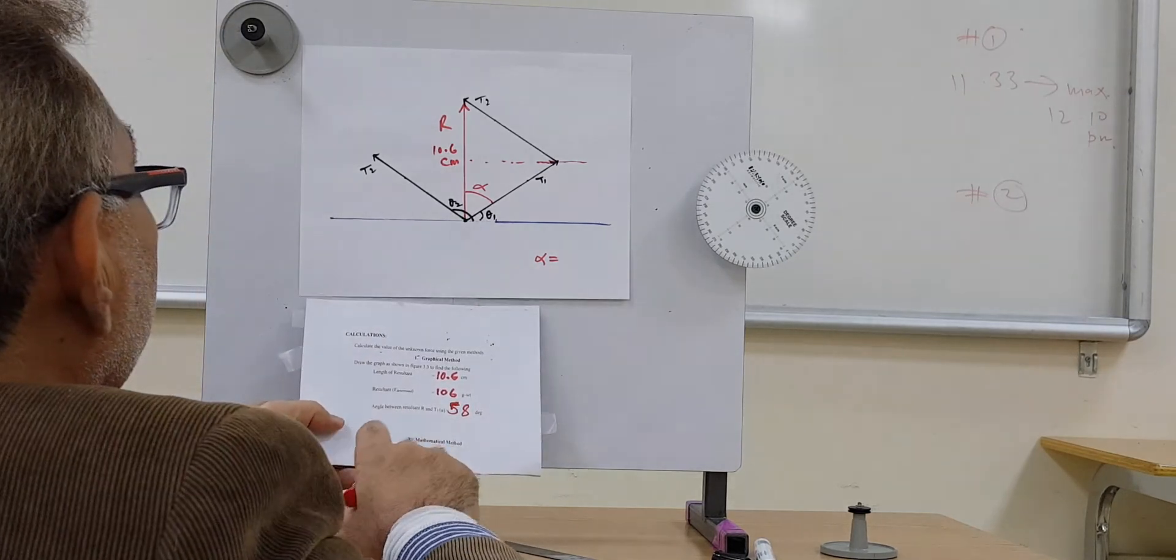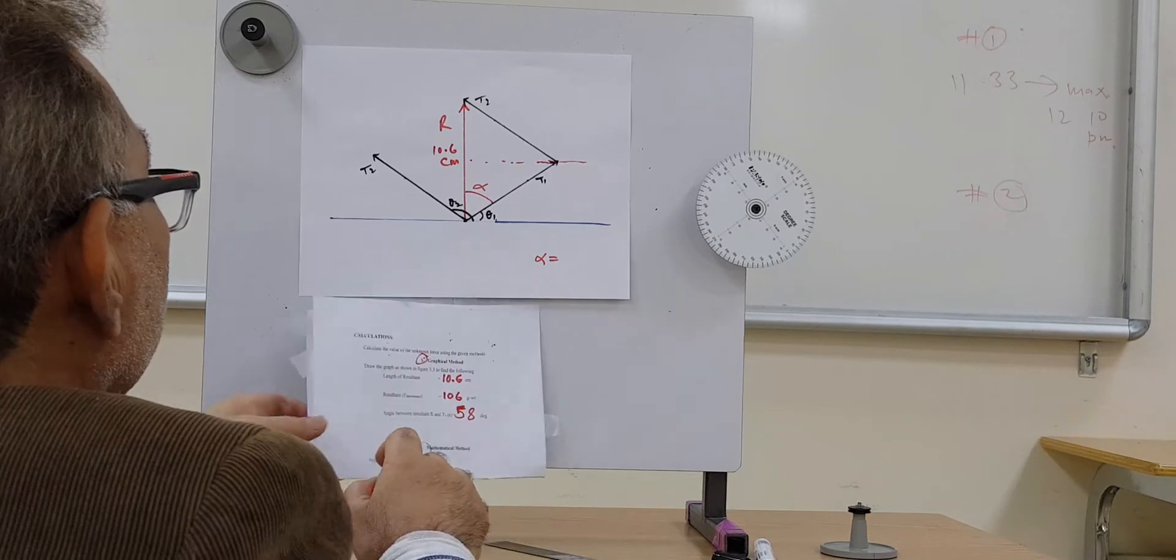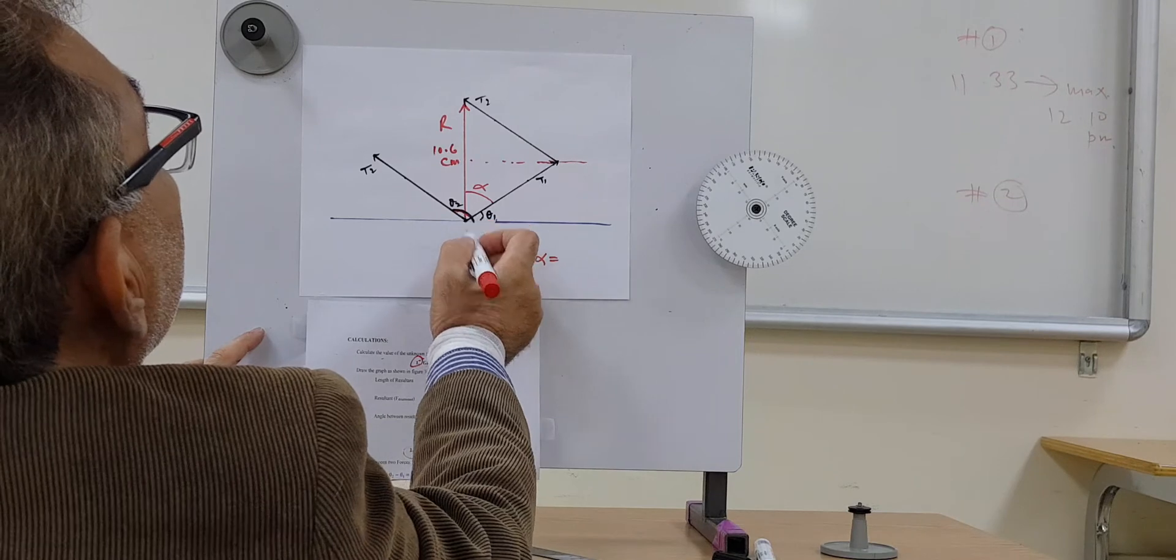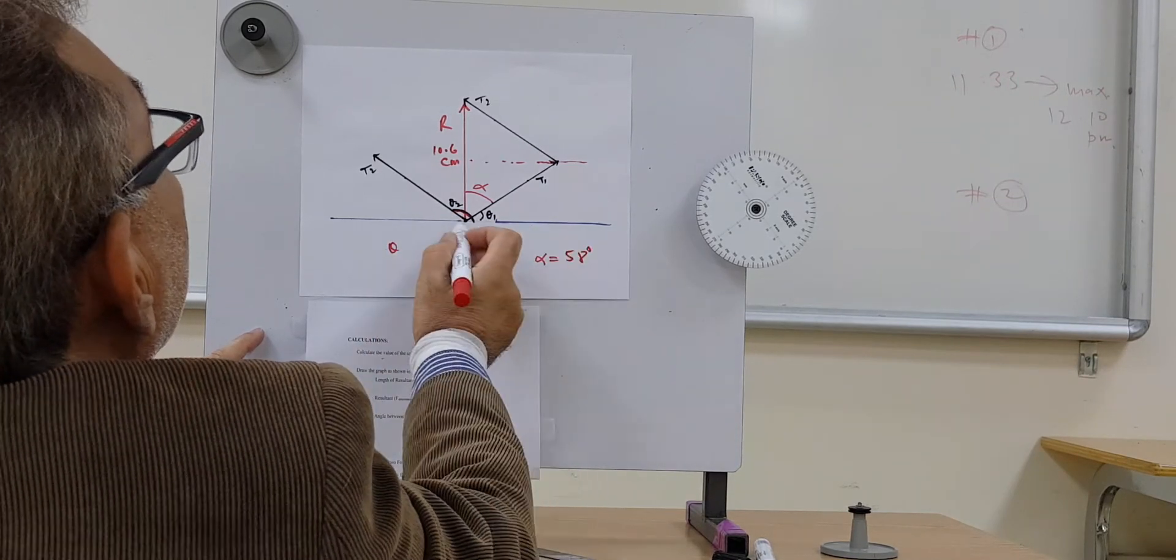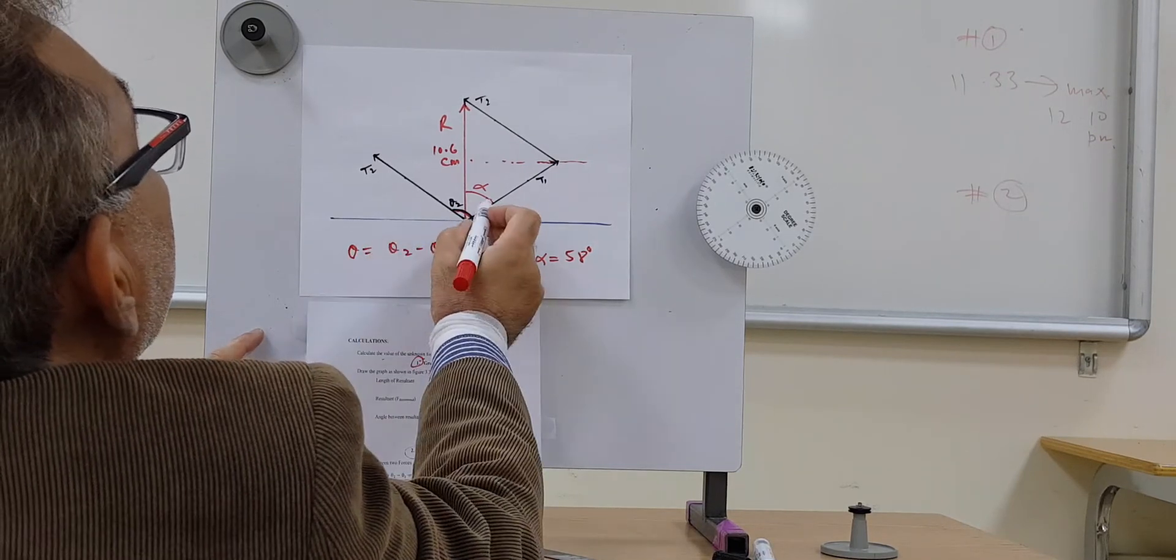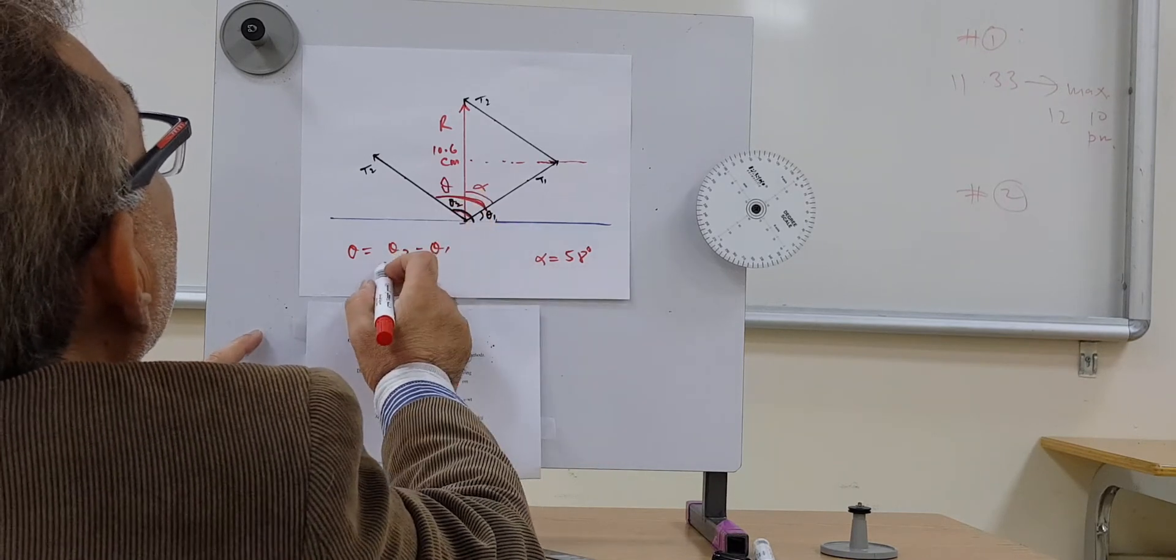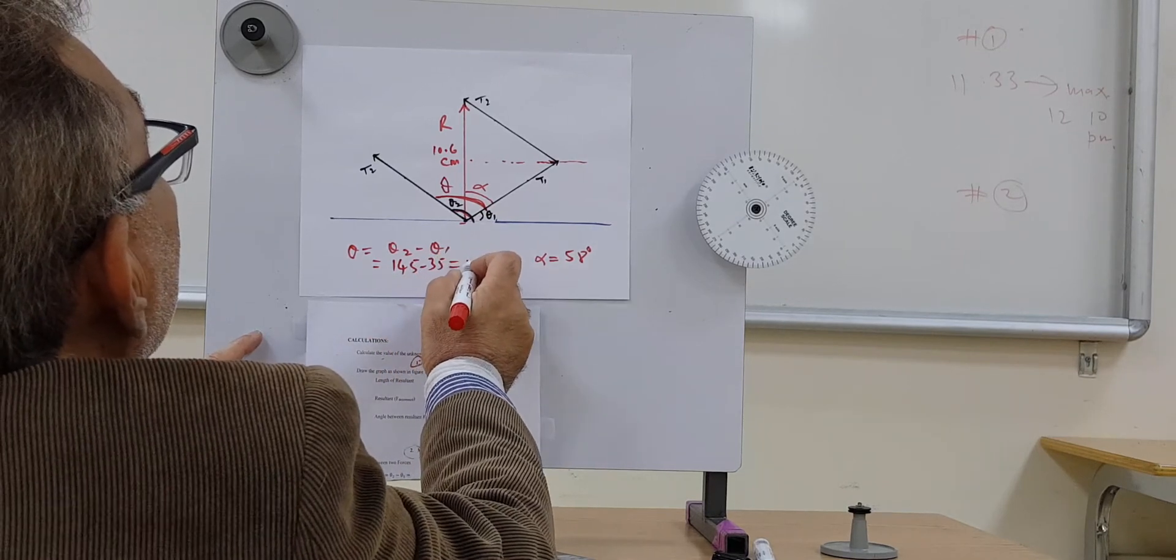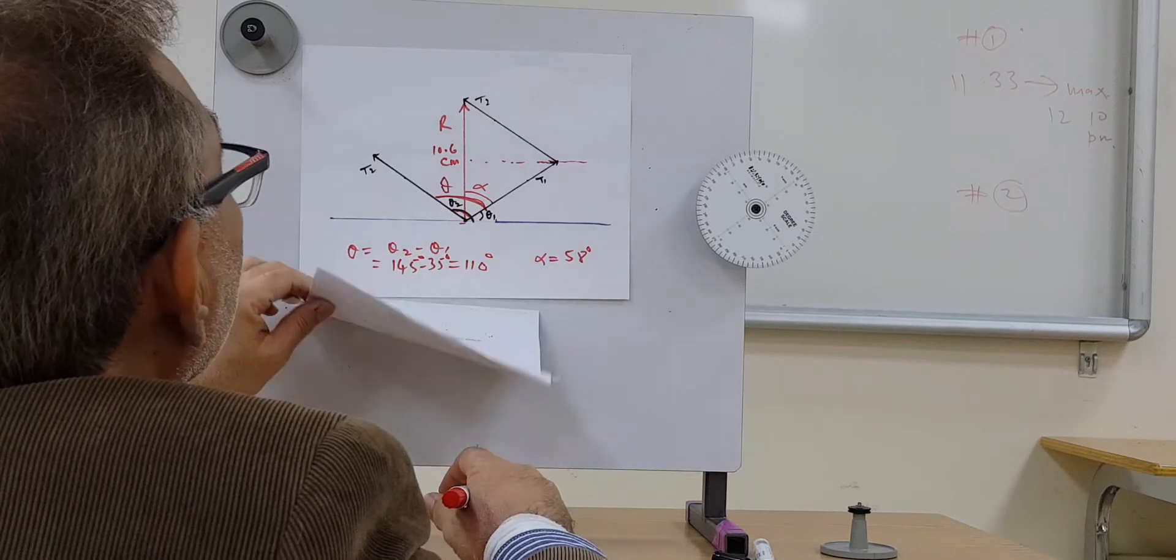And then you have the second method. This was the first method. The second method: this is theta 2, this is theta 1. Theta 2 minus theta 1, you have this theta. Theta 2 is 145 minus 35, which is 110 degrees.